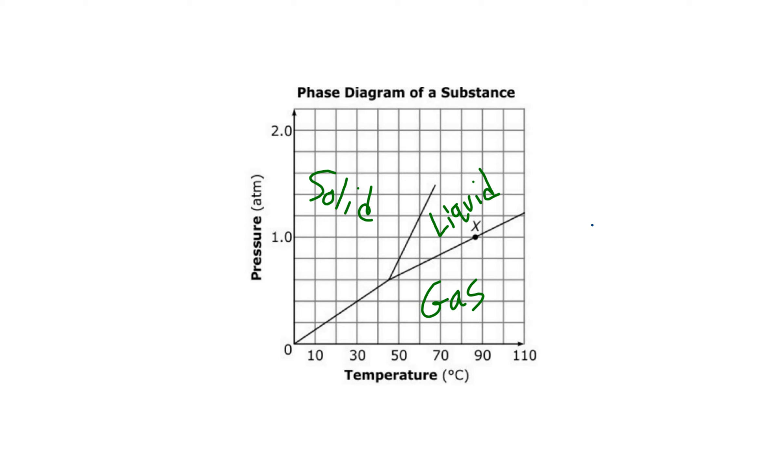This is a phase diagram, and so every phase diagram, no matter what material it is, you're going to have temperature and pressure. And this section over here is going to be solid. Everything inside the Y here, that is a liquid, and everything over here in this section is going to be a gas.